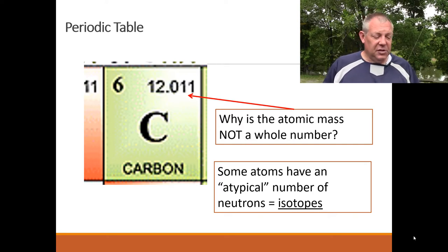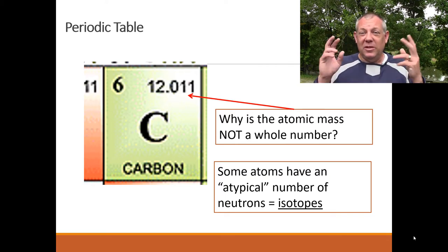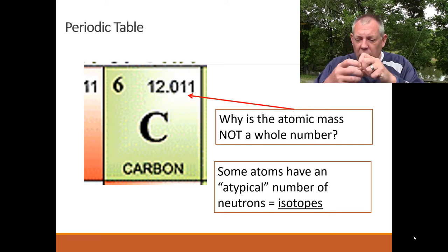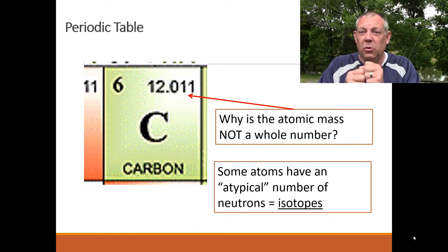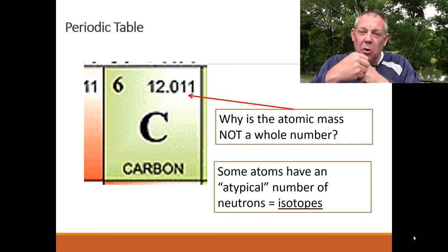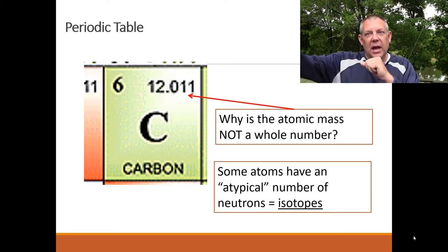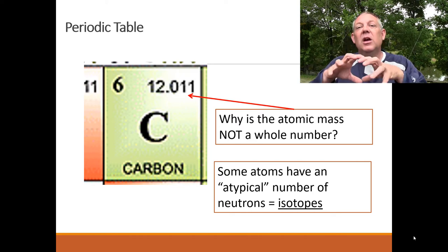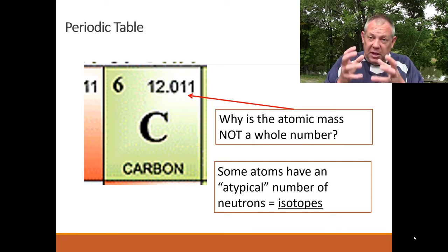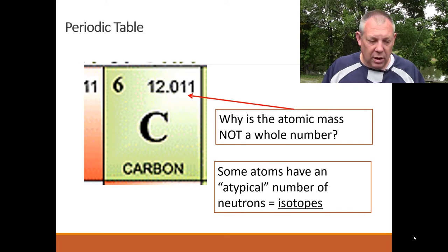Some elements have a non-standard number of neutrons, which makes them unstable. When I say standard or typical, I mean it's a low-energy state — molecular forces are balanced and it doesn't want to react. But if you've got an extra neutron or two, the forces inside the nucleus aren't balanced. It's at a high-energy state and wants to shed those extra neutrons to reach a lower energy state. That's what makes isotopes radioactive.